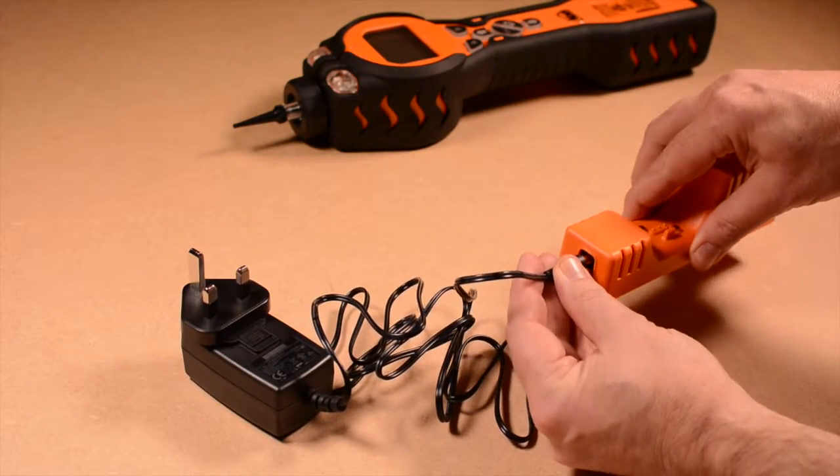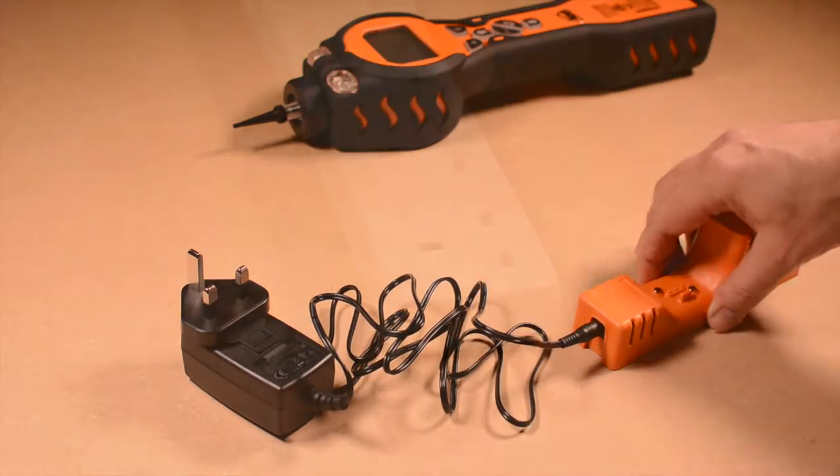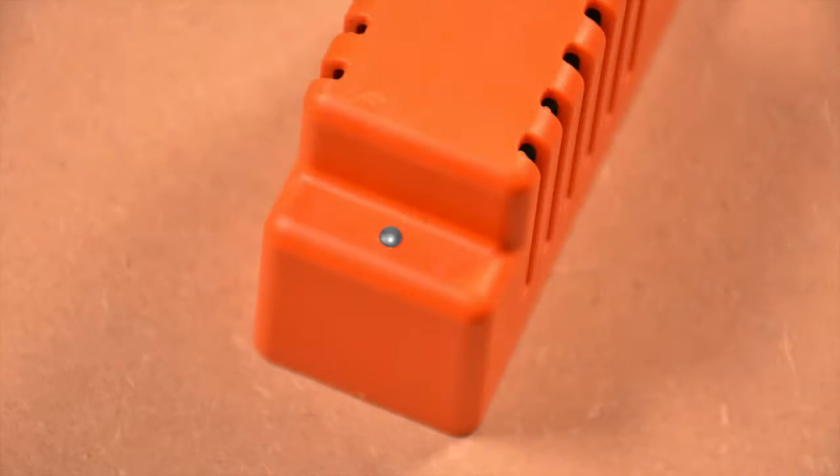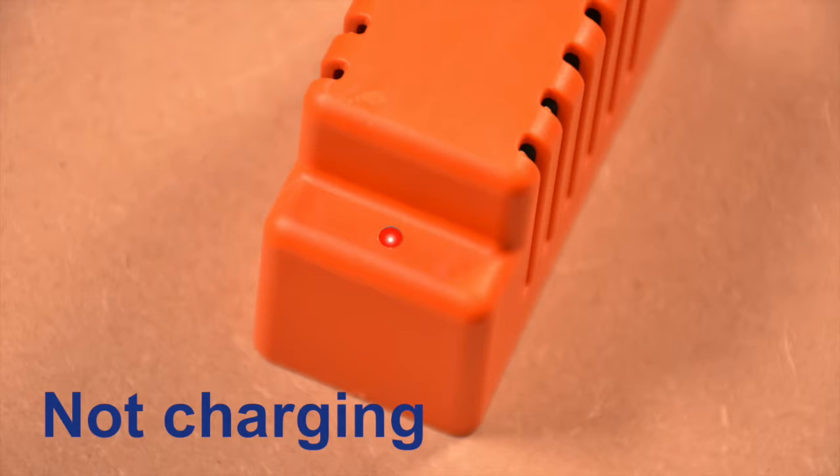Now push the charger jack into the charge cradle socket and plug in the power adapter. The LED initially illuminates red, suggesting power is on but it's not yet charging.